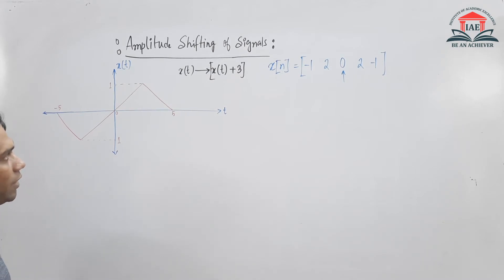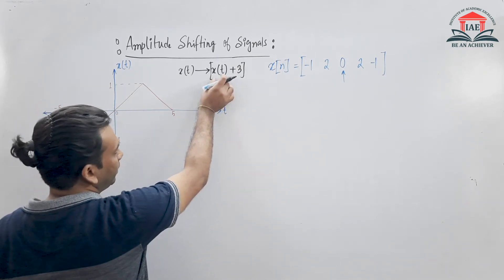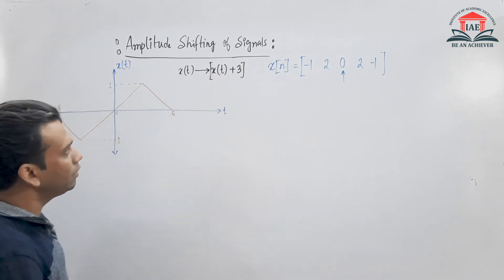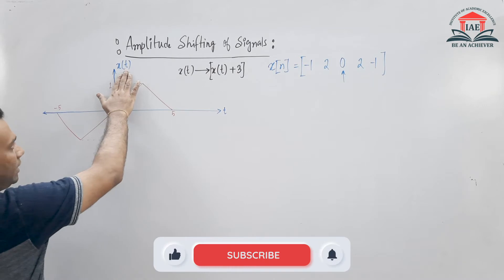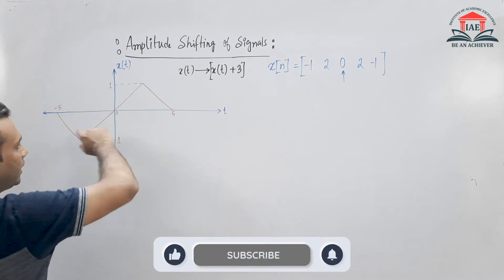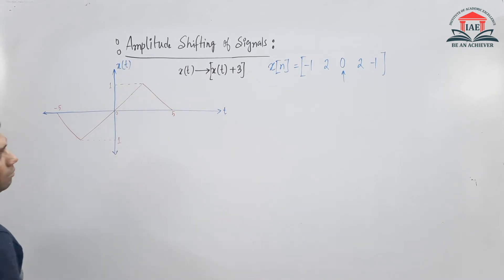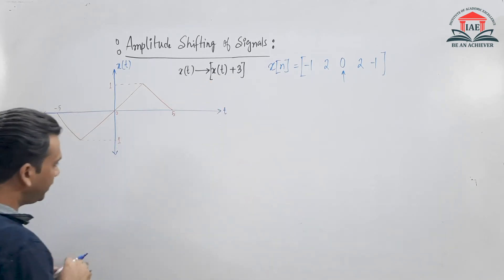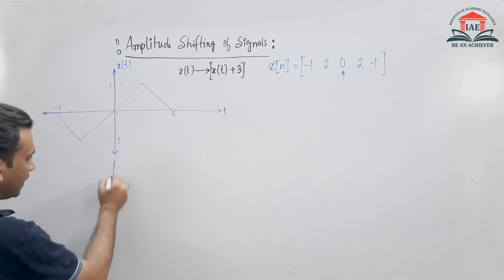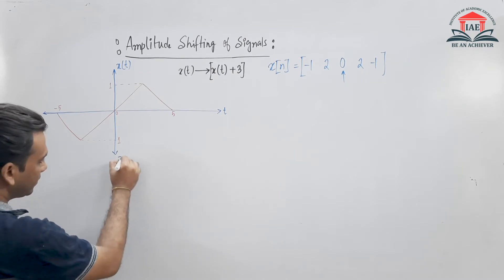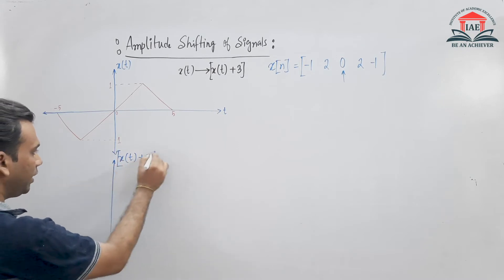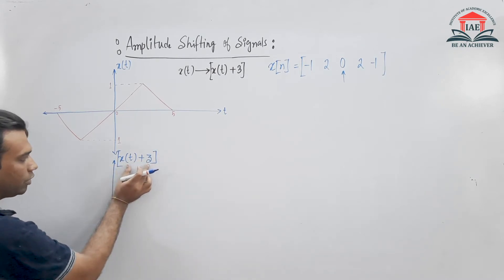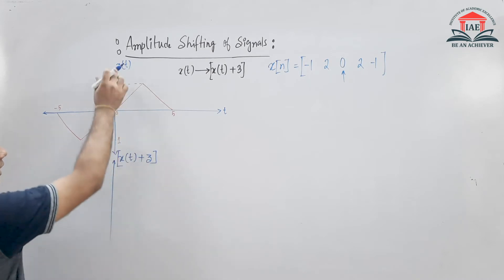In this continuous time signal, if I write the signal as x(t) + 3, this is the amplitude shifting version of the signal. So x(t) is a triangular wave, and x(t) plus 3 means we want to find the amplitude shifting version of x(t).